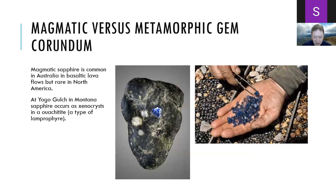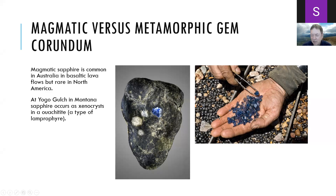Gem corundum deposits can also be divided into metamorphic and magmatic. Magmatic sapphire is common in some parts of the world such as Australia, and at Yogo Gulch in Montana where sapphire occurs as xenocrysts in a lamprophyre rock called a wychiite. The Montana sapphires have a distinctive cornflower blue color and a very flat morphology, but that's about the only occurrence of magmatic gem corundum in North America.